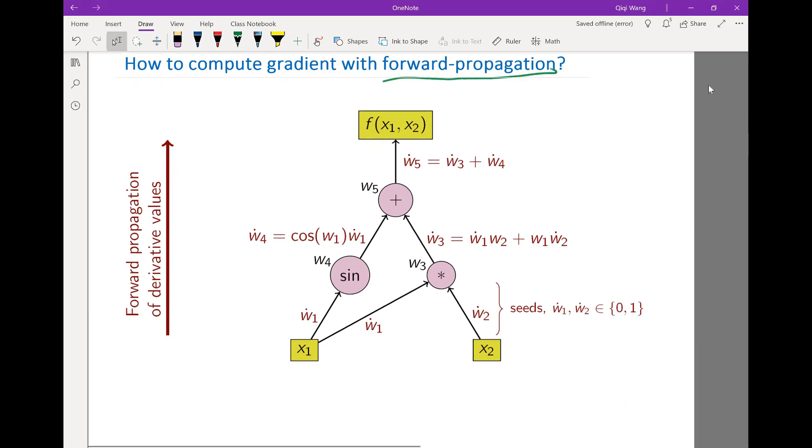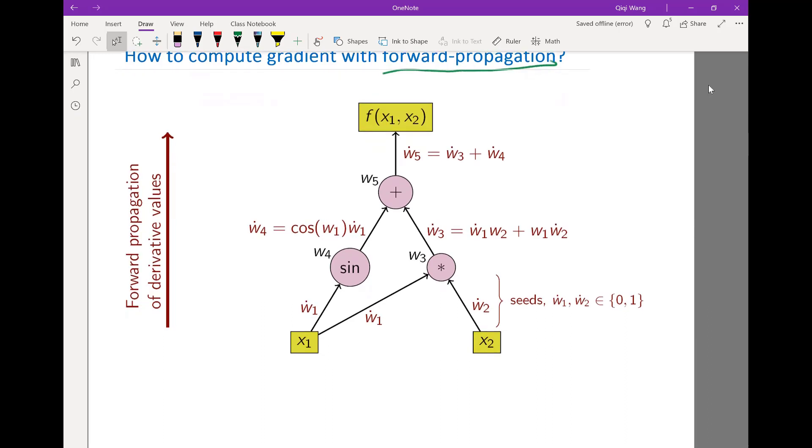I want to illustrate this method with a simple example. The example is really a very simple function, f being a function of two design variables. Let's say f is either the constraint or objective function. It is written as x1 times x2, the product of the two design variables, plus a sine function of x1. So this is basically our simulation.